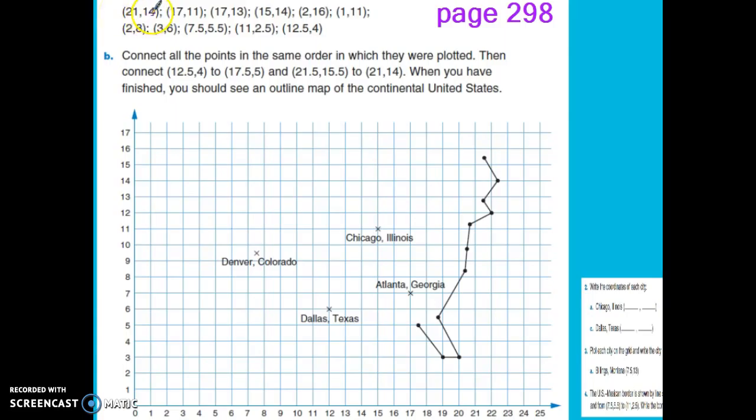We have some more numbers on this coordinate grid than we had last time. We go all the way up to 21, so (21,14) is our first ordered pair. Remember we always run, so run 21 before we jump. We're going to jump up all the way to 14.